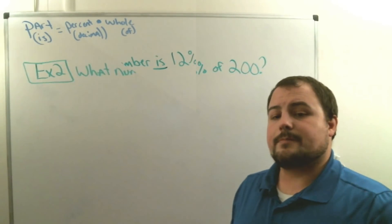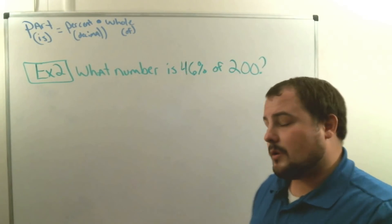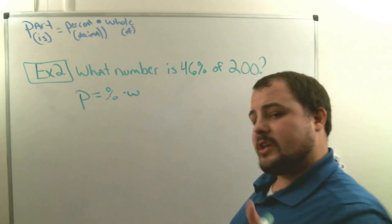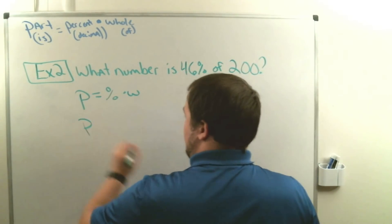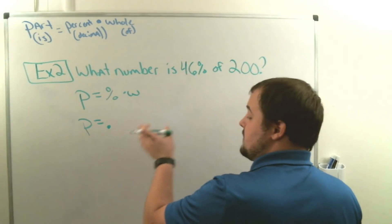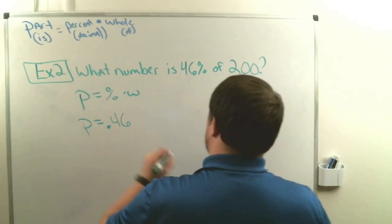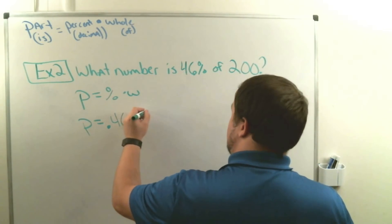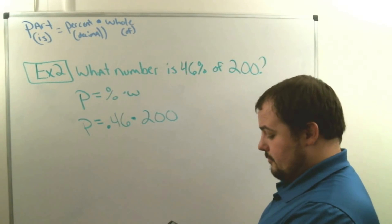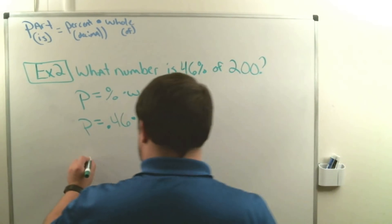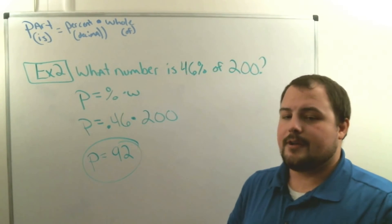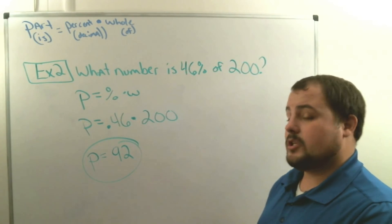Example two: 'What number is 46% of 200?' Start with p equals percent times whole. We're looking for the part, so p is our variable. 46% as a decimal is 0.46. 'Of' means times 200, so p equals 0.46 times 200. Using a calculator: 0.46 times 200 equals 92. So the part equals 92 — meaning 92 out of 200 is 46%.